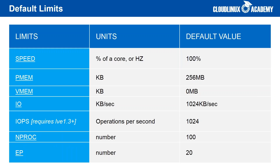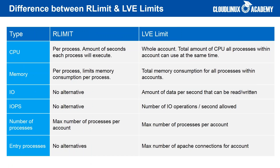Default limits are: CPU speed — one full core; physical memory — 256 MB; IO — 1 MB per second; IOPS — 1024; number of processes — 100; and entry processes — 20. We strongly recommend disabling vmem limits, as the physical memory limit is a much better and more accurate way to limit memory for shared hosting.